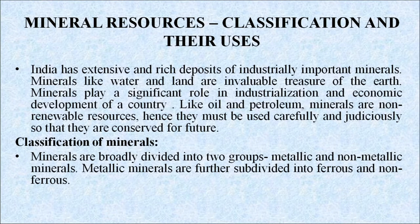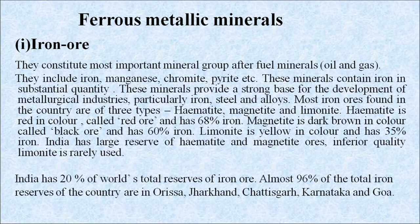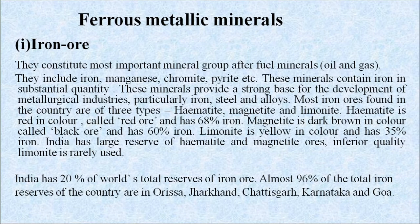Metallic minerals are further subdivided into ferrous and non-ferrous metals. Ferrous metallic minerals include iron, manganese, and chromium. Non-ferrous metallic minerals are gold, silver, tin, copper, zinc, etc. Ferrous metallic minerals constitute the most important mineral group after fuel minerals and include manganese, chromium, pyrite, iron, etc. These minerals contain iron in substantial quantity and provide a strong base for the development of metallurgical industries, particularly iron, steel and alloys. Most iron ore found in the country is of three types: hematite, magnetite and limonite. Hematite is red in color, called red ore, and has 68% iron. Magnetite is dark brown, called black ore, and has 60% iron. Limonite is yellow in color and has 35% iron.